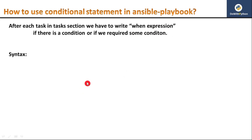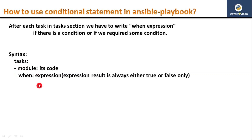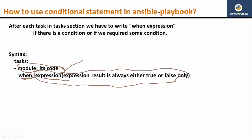If you require some condition, you have to include this expression in your task — but it is optional. Based on the situation, if it is required, then you have to include the 'when' section in each task. In tasks, generally we write one, two, three or more tasks based on your requirement. For each task, you will require one module and its arguments, and after completion of that task, you write 'when' and some expression.